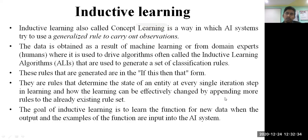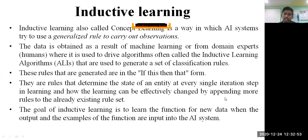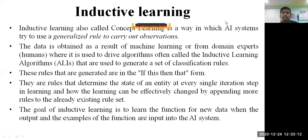The rules determine the state of an entity at every single iteration or step in the learning process, and can be effectively changed by appending more rules to the already existing rules. If existing rules are not well suitable for a given process, the inductive learning algorithm will iterate and go for new rule generation. The goal of inductive learning is to learn the function for new data when the output and examples of the functions are input to the AI system.